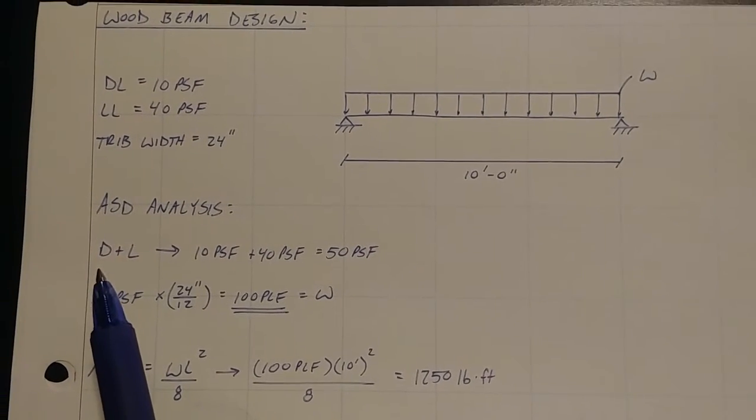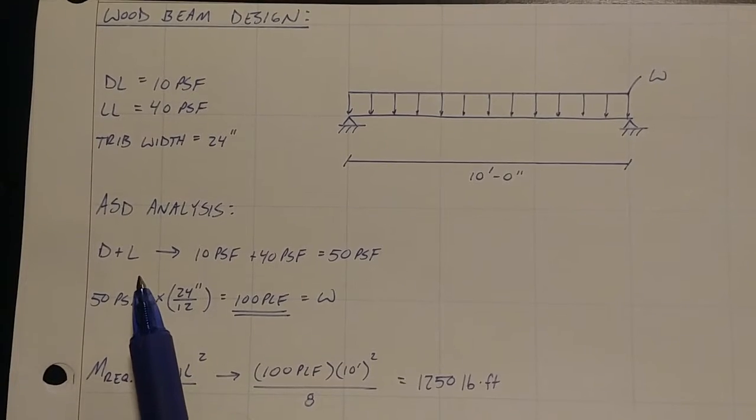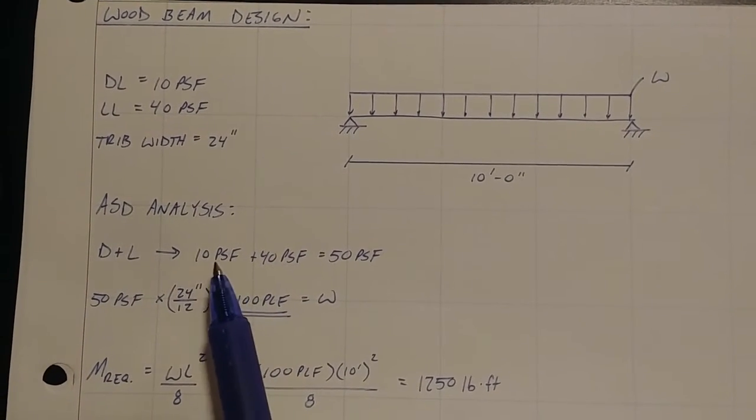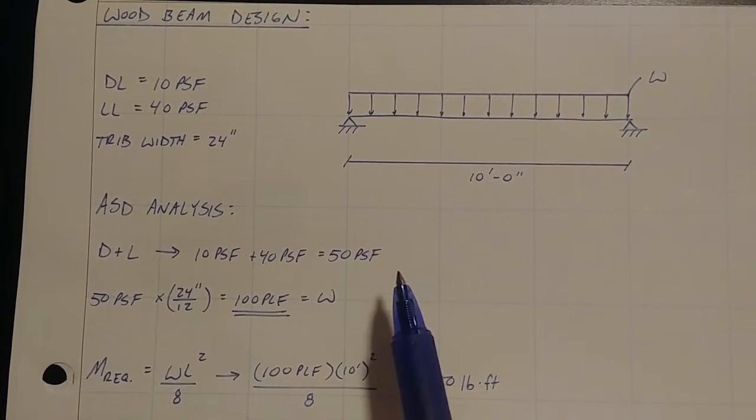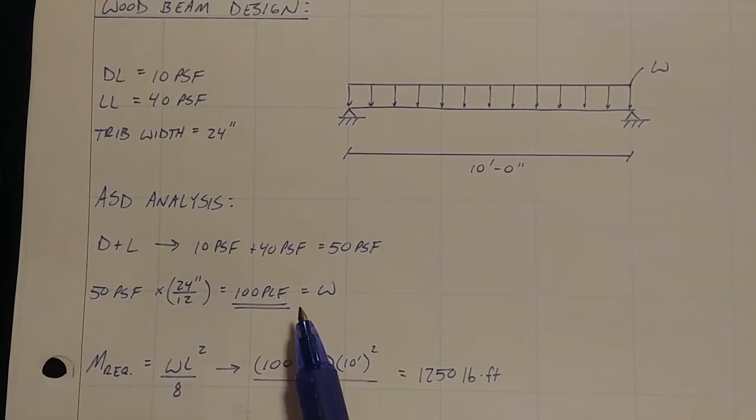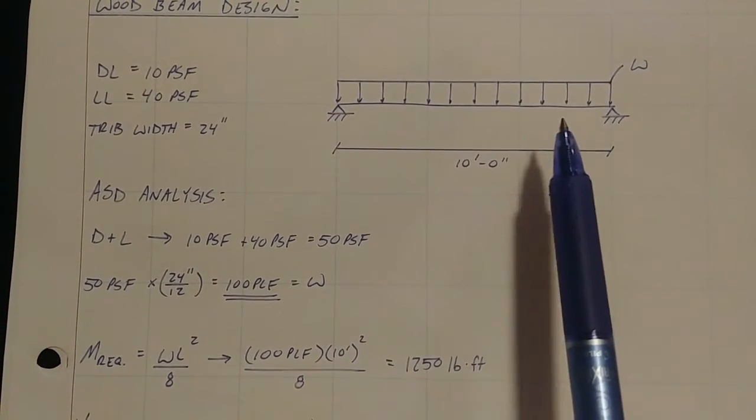The load case that's going to be controlling for the scenario is ASD dead plus live. So that's really easy. 10 plus 40, 50 PSF with a two foot trip width that gets you 100 PLF as W. So that's your uniformly distributed load across your beam.